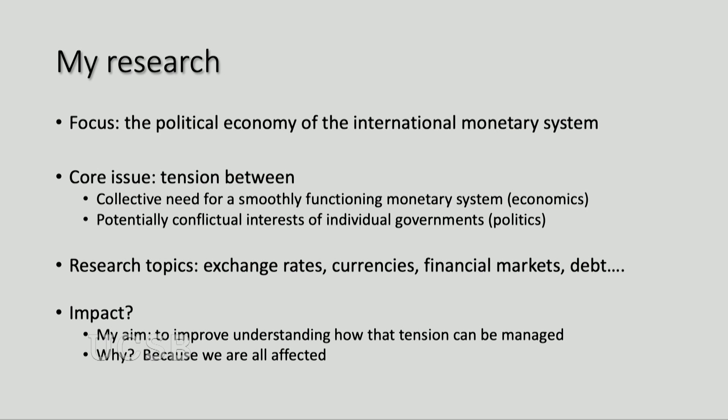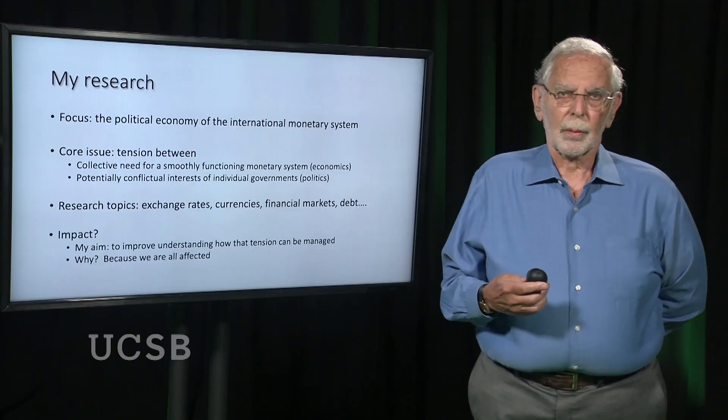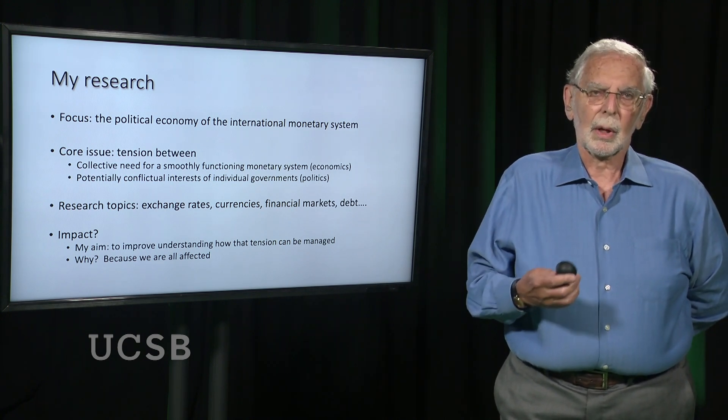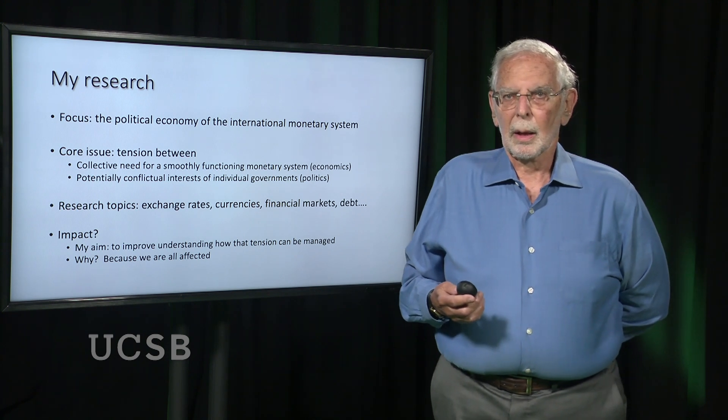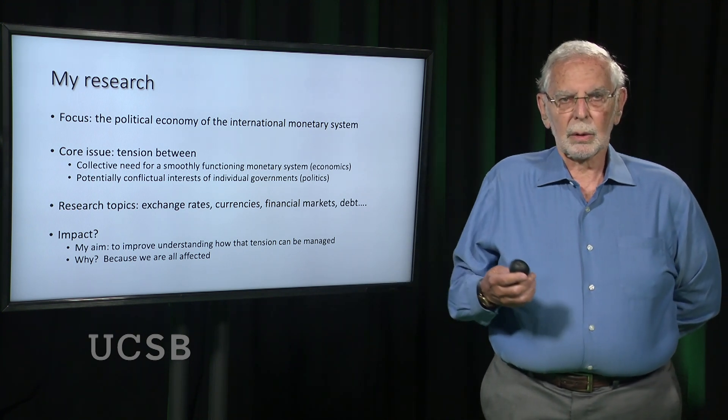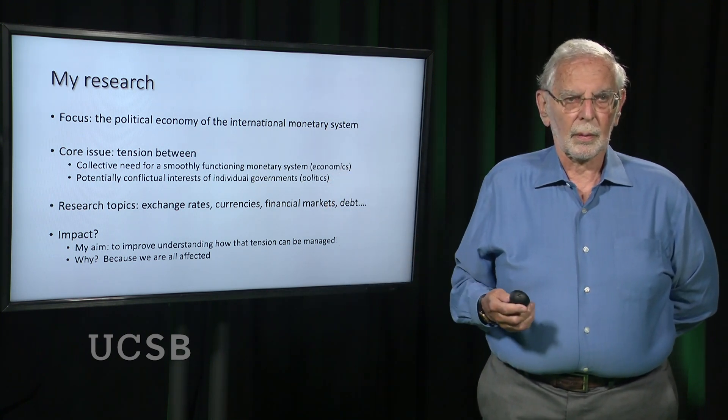Very early on, it came to me that the basic problem of the international monetary system — this collection of national monetary monopolies — is that there is a tension between two things. On the one hand, we all have a collective interest in having a stable and efficient international monetary system. An international monetary system is like the lubricant that keeps the wheels of commerce moving. But on the other hand, we also have the politics of separate sovereign states, each with their own national monetary monopoly, and those states will not necessarily agree on what best serves their interests.